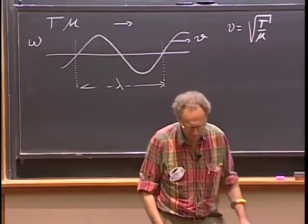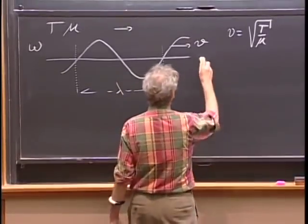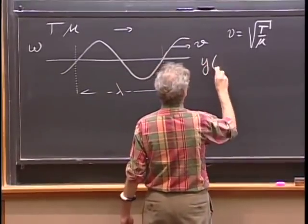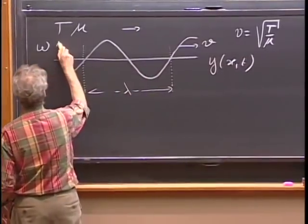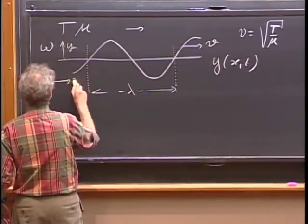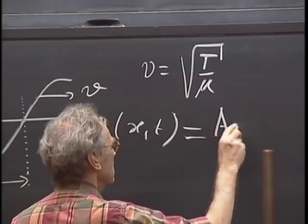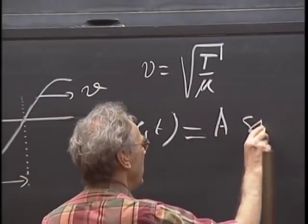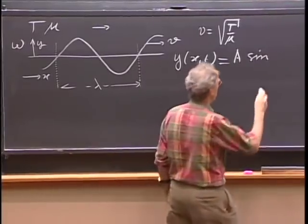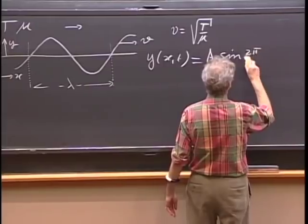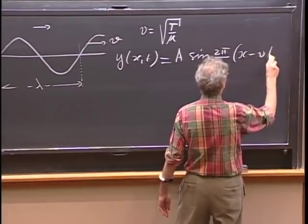V is the square root of T divided by mu — we derived that last time. So Y as a function of X and T, with Y in the transverse direction and X along the string, is: amplitude A times the sine (or cosine) of (2π/λ) times (X minus VT).